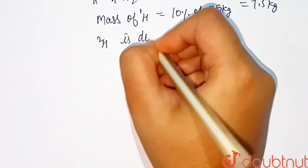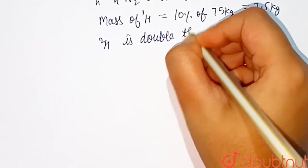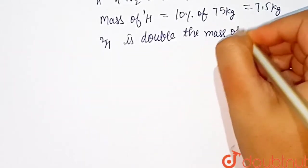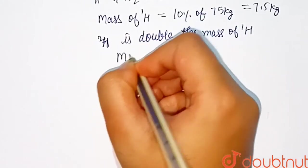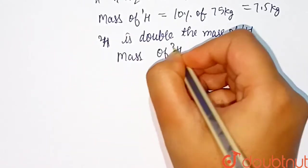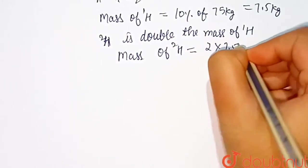is double the mass of H1, therefore mass of H2 equals 2 times 7.5 kg, which is equal to 15 kg.